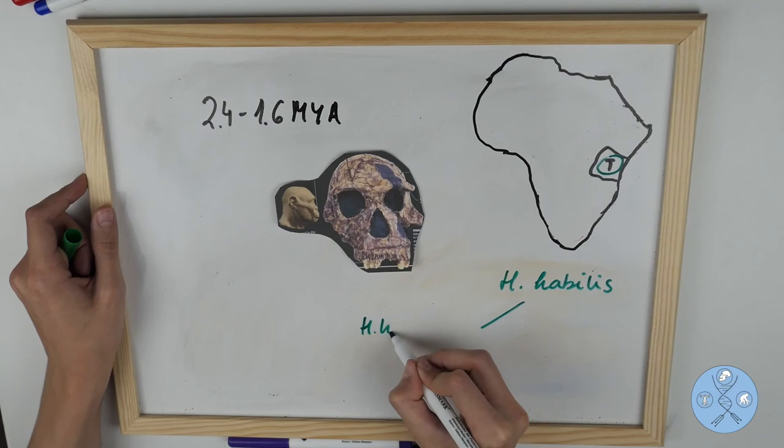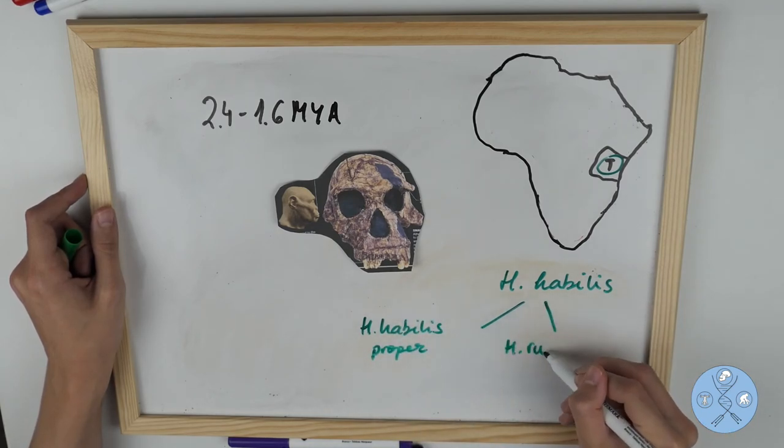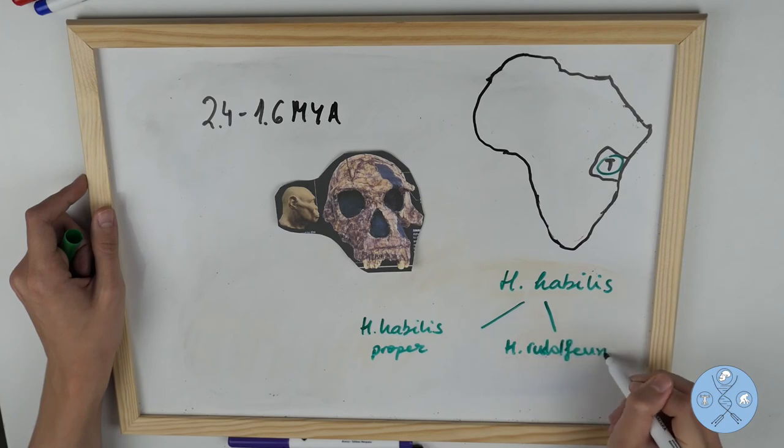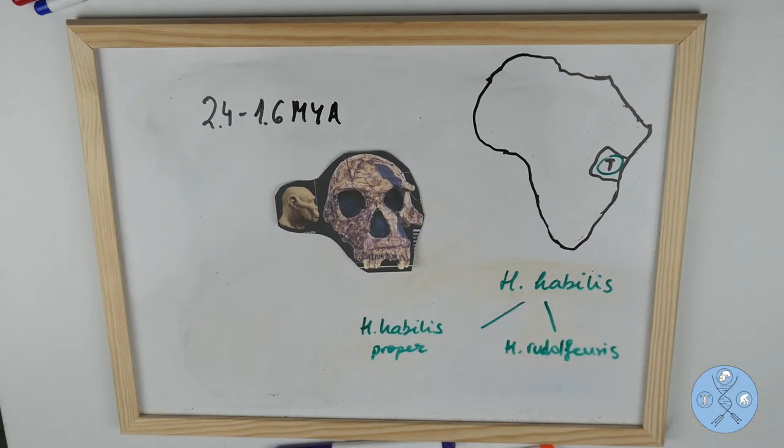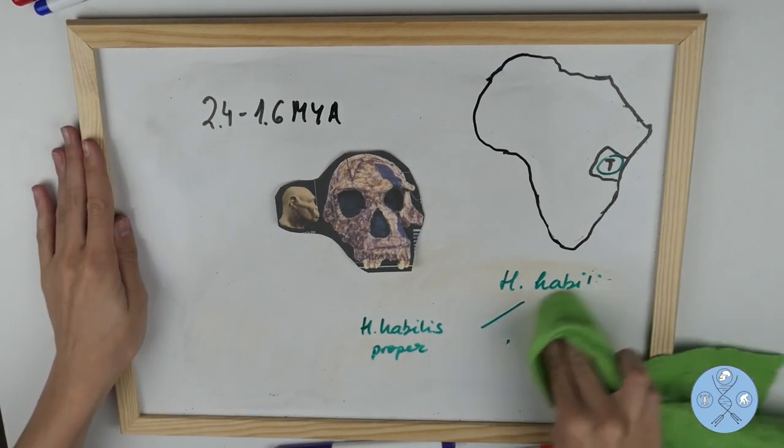Because of the variable features found in different remains of Homo habilis, researchers now divide it up into two species: Homo habilis proper and Homo rudolfensis, which had a bigger brain, face, and chewing teeth.